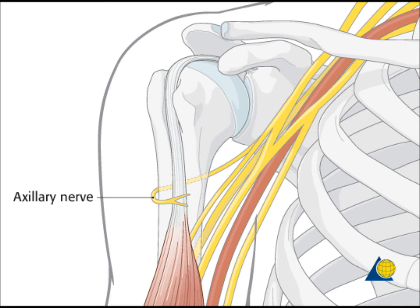Let's not forget that numerous nerves and vessels responsible for the innervation and perfusion of the arm run through the axilla, the most vulnerable being the axillary nerve and artery.